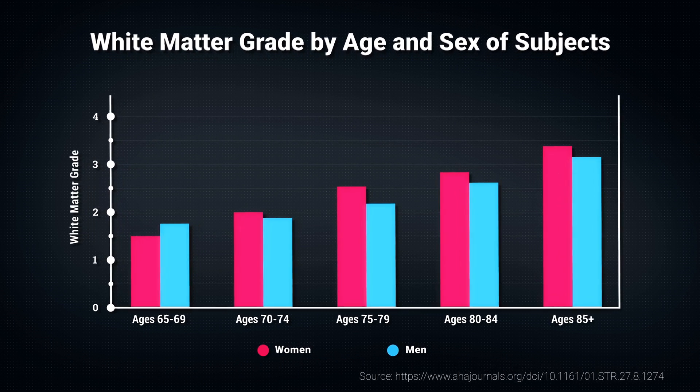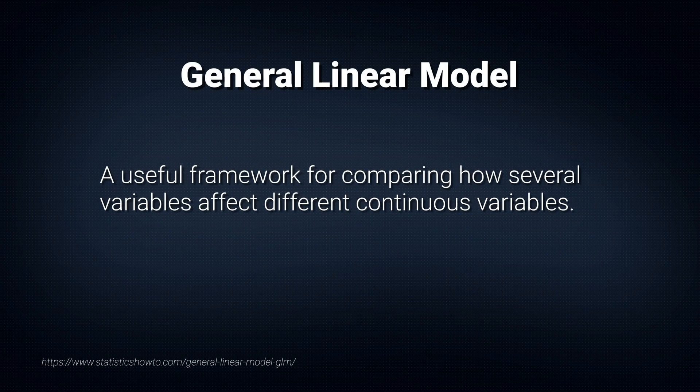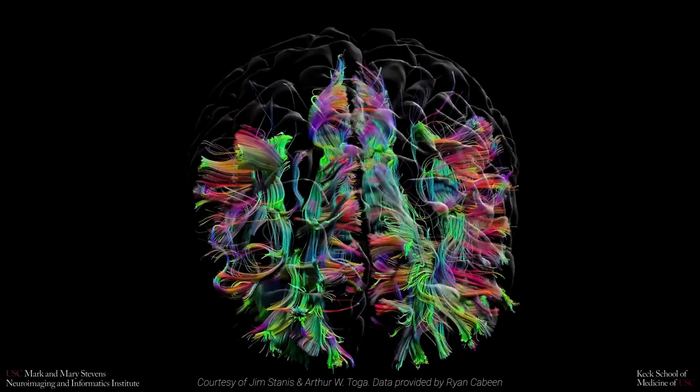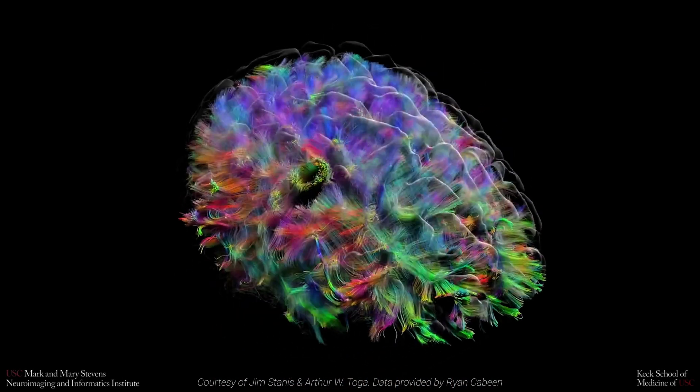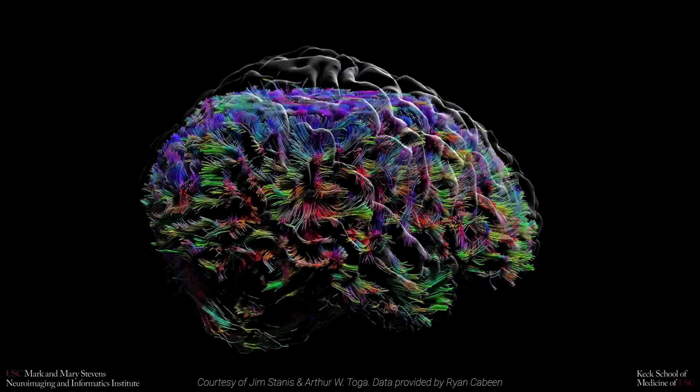One of the greatest strengths of the general linear model is that it provides a way to model brain activity and brain structure in a very general way that is well understood by statisticians. Because most phenomena in the brain and in neuroscience can be modeled using this kind of approach, it is a very versatile way to analyze brain data.